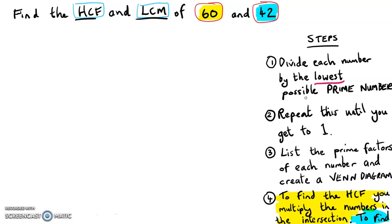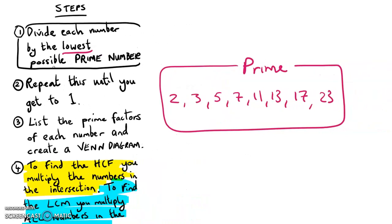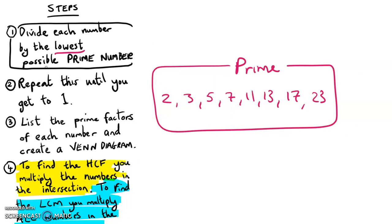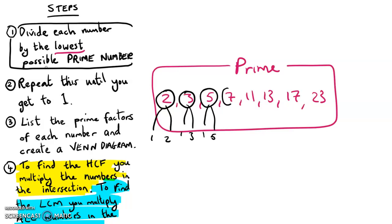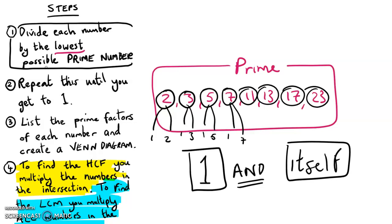Step one is we must divide each number by the lowest possible prime number. Prime numbers are numbers that can only be divided by the number one and the number itself. The first prime number is two because the only two numbers that can go into it are one and itself. Three — the only two numbers that can divide into three are one and three. Five — one and five. Seven — one and seven. So all prime numbers must be divided by exactly two things: one and itself.